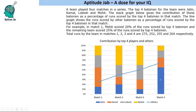Hello everyone, welcome to Aptitude. This set is based on a bar and line graph. There are four matches in a series and the top four batsmen for the team were Jatin, Kamal, Lokesh, and Mohit. The stacked bar graph shows the contribution of these batsmen as a percentage of runs scored by the top four batsmen in each match. The line graph shows the runs scored by other batsmen as a percentage of runs scored by the top four batsmen in that match.